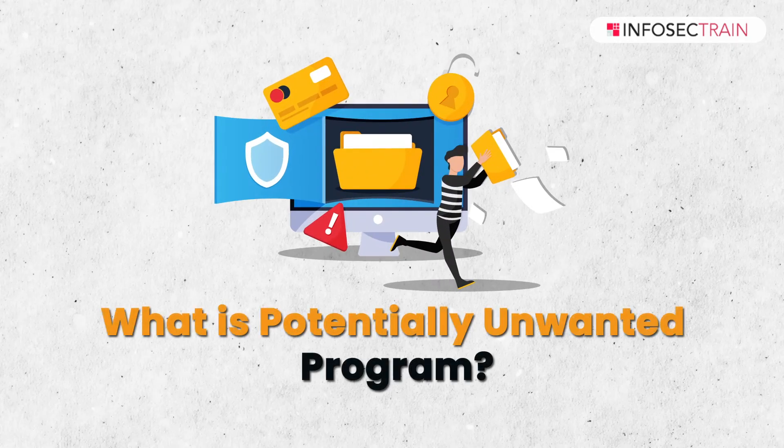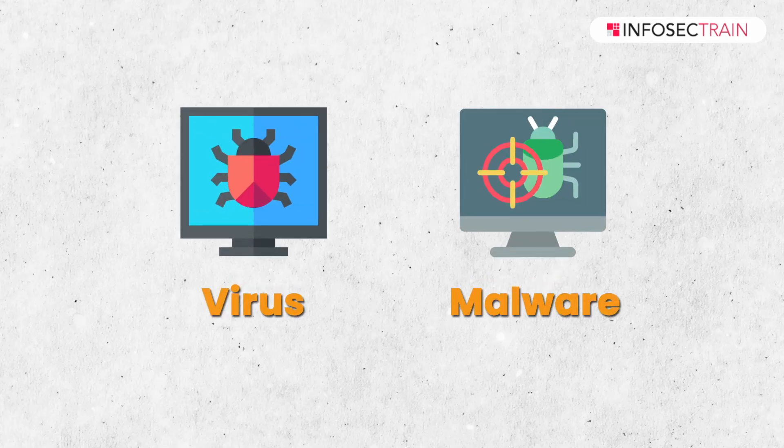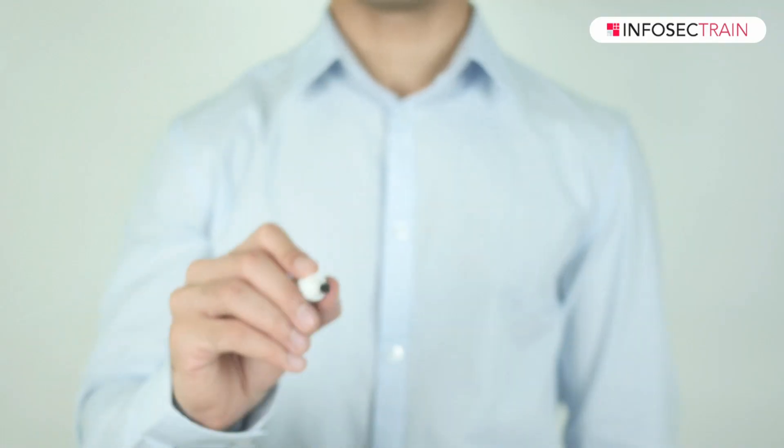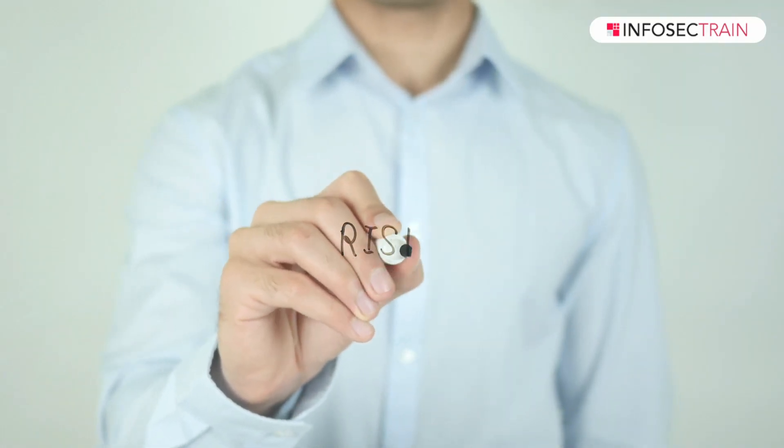The first question is: what is a potentially unwanted program, which is also called a PUP? PUP, or potentially unwanted program, refers to the category of software that often raises eyebrows due to their dubious nature and questionable intention. While not outright malicious like a virus or malware, PUPs can still pose a significant risk to user privacy, security, and overall online experience. Understanding what PUPs are, how they operate, and how to protect against them is crucial in today's digital age.